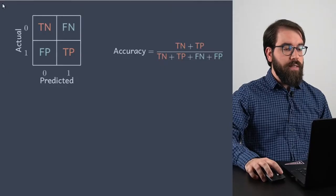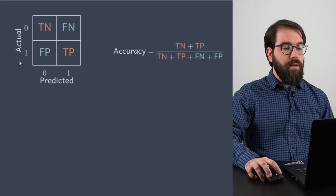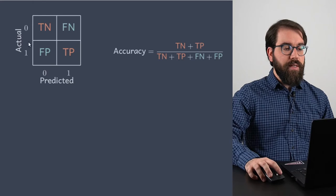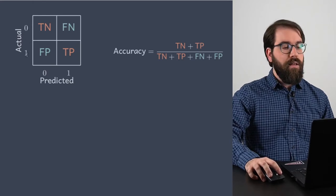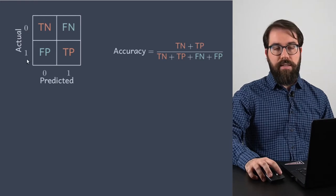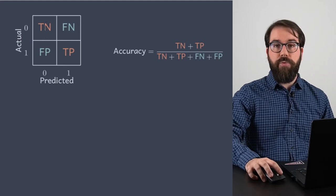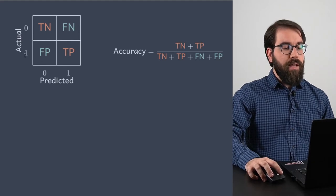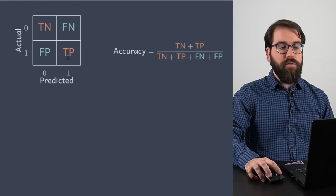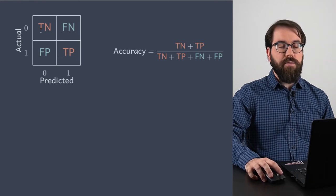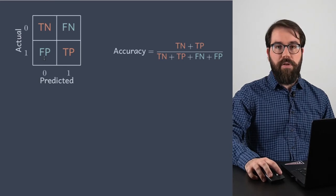Let's take a look at the confusion matrix. The confusion matrix has the actuals against the predicted. Usually people represent as zeros and ones, calling the zeros the negative class and the ones the positive class. When the actual zeros coincide with the predicted zeros you have the true negatives; when the actual ones coincide with the predicted ones you have true positives. Anything outside of the diagonal are the errors: false negatives and false positives.